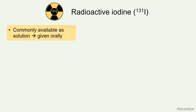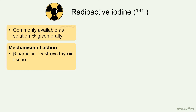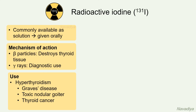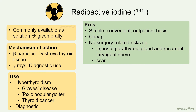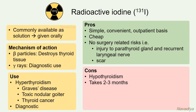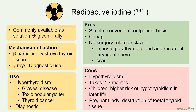Quick summary: radioactive iodine is available as a solution given orally. Its mechanism involves emission of beta particles which destroy thyroid tissue, and gamma rays used for diagnostic purposes. Uses include hyperthyroidism such as Graves' disease, toxic nodular goiter, and thyroid cancer, as well as diagnostic applications. Pros: simple, convenient, outpatient therapy; cheap; no surgery-related risks like injury to parathyroid gland and recurrent laryngeal nerve; and no scar. Cons: risk of hypothyroidism; takes 2 to 3 months for effects; cannot be used in children due to higher risk of hypothyroidism in later life, or in pregnant women due to destruction of fetal thyroid tissue.